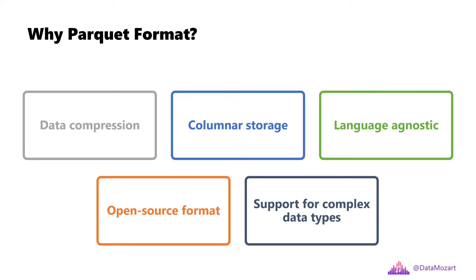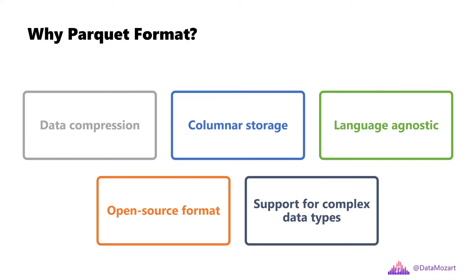We've already mentioned that Parquet is a column-based storage format. However, to understand the benefits of using the Parquet file format, we first need to draw the line between the row-based and column-based ways of storing the data. In traditional row-based storage, the data is stored as a sequence of rows, something like this you may see on your screen now.